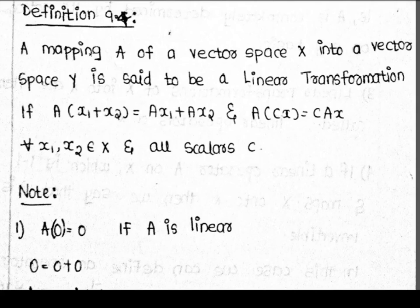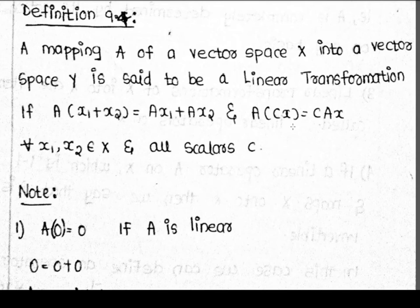Definition: A mapping A of a vector space X into a vector space Y is said to be a linear transformation if A(x1 + x2) = A(x1) + A(x2), and A(c·x) = c·A(x), for all x1, x2, x belonging to the space X and for all scalars c.